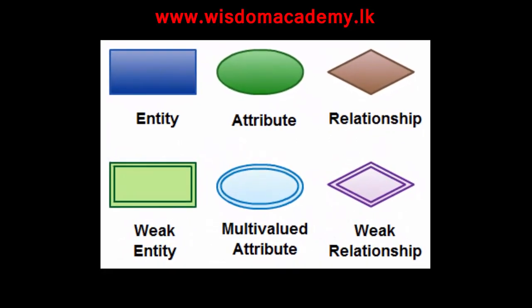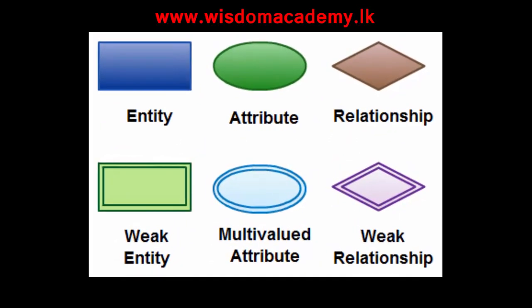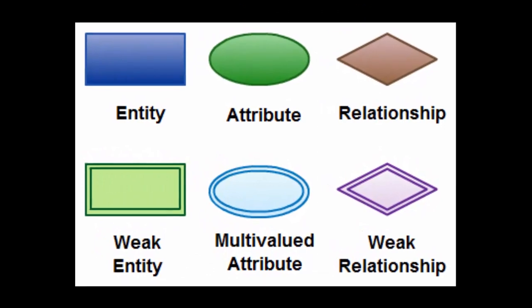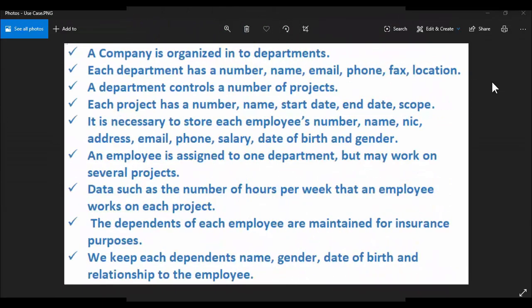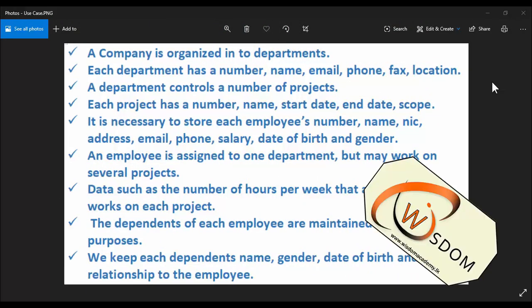Let's have a look at a simple ER diagram to understand this concept. The company is organized into departments. Each department has a number, name, email, phone, fax, and location.